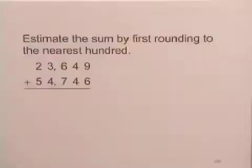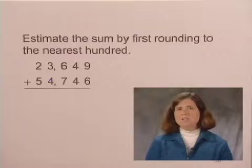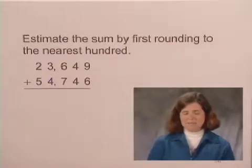In this exercise, we'll estimate by rounding. We're supposed to estimate the sum of these two numbers by first rounding to the nearest hundred. This means to round each of the numbers separately and then add those rounded numbers to get an estimated sum.